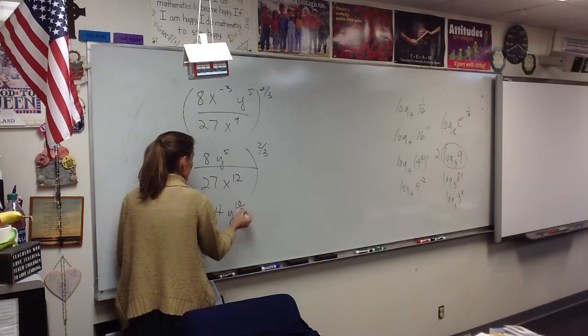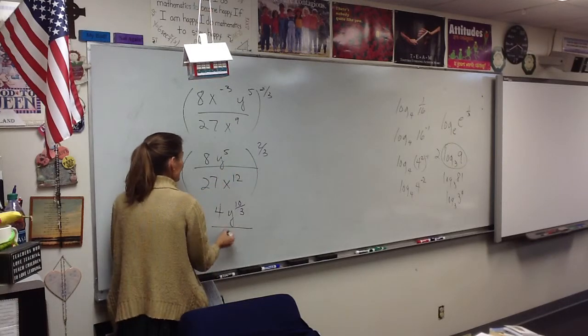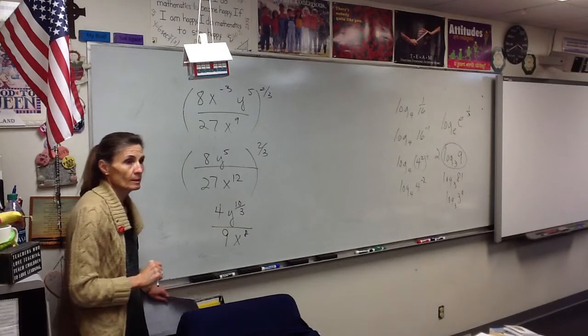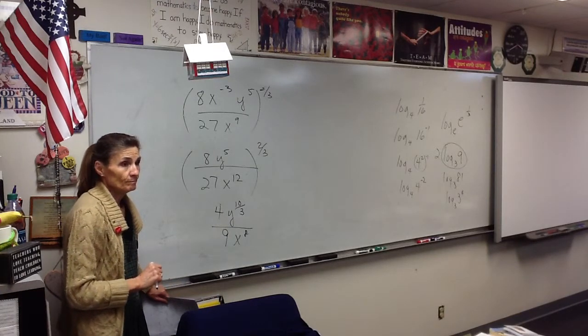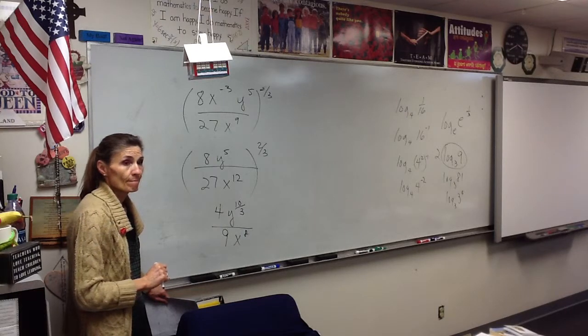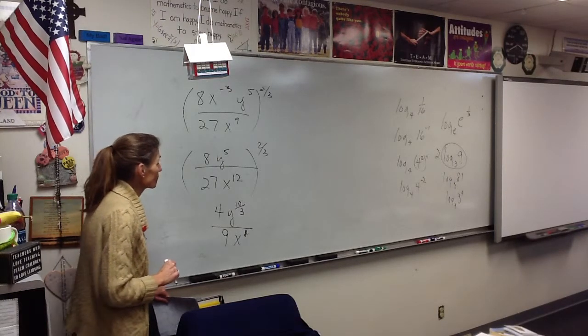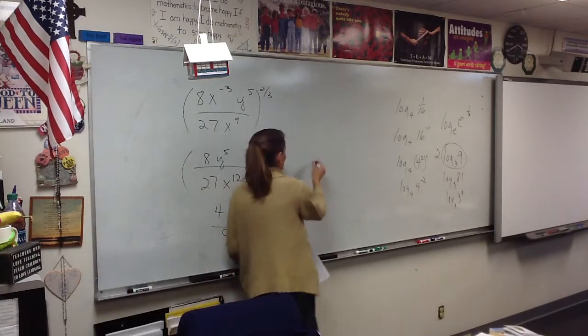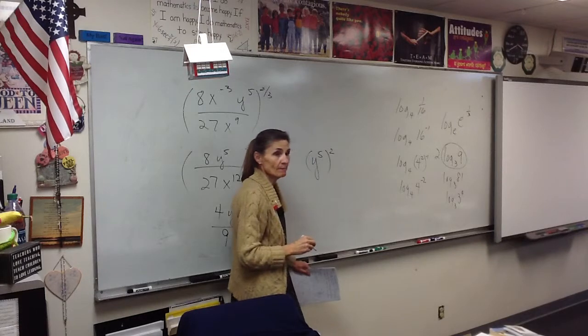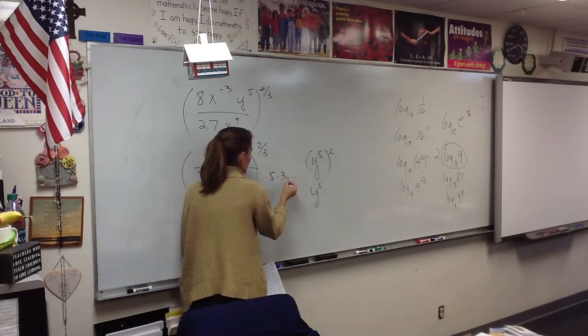So the cube root of 8 squared is 4. Y to the 10 thirds. The cube root of 27 squared is 9 x to the 8. There it is. Why does y to the 5th go to 10 thirds? How does that work? Y to the 5th squared. Let's just do that. What does that mean? Y to the 5th. Okay. So what's 5 times 2 thirds?